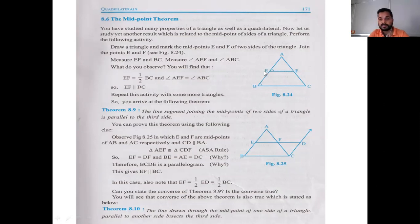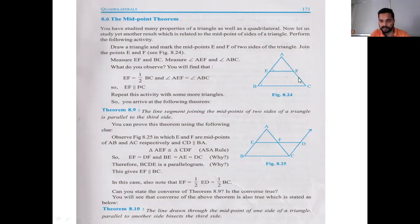Suppose ABC is a triangle and E is the midpoint of one side. If we draw a line from point E parallel to BC, then that line will bisect the third side.